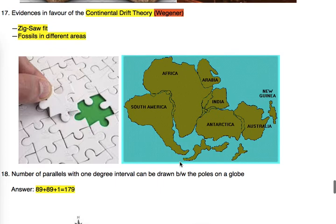Moving to the 17th point: evidence in favor of continental drift theory, given by Wegener. The most important evidences are jigsaw fit and fossils in different areas. The jigsaw fit is like a puzzle game — similarly, on the globe, the continents can be arranged in jigsaw fit fashion. The second evidence is fossils found in different areas that are of the same age, dated by carbon-14.